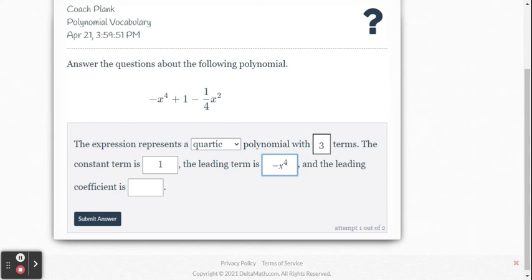And then the lead coefficient is just the negative one. It says negative x to the fourth. That means it's negative one x to the fourth.